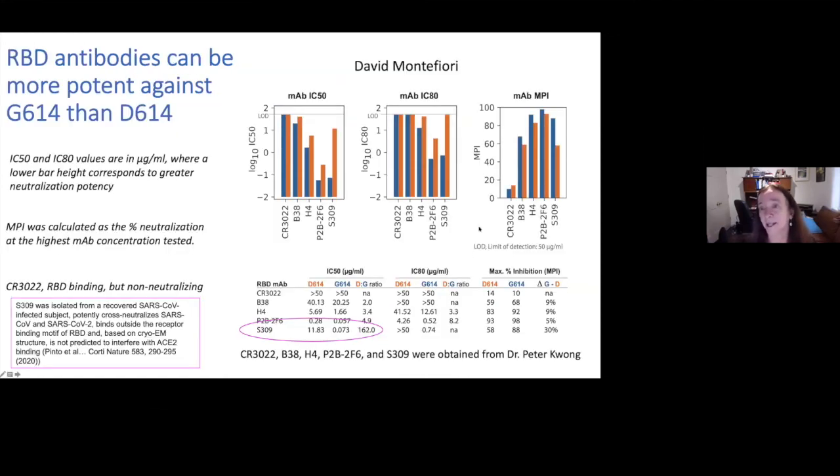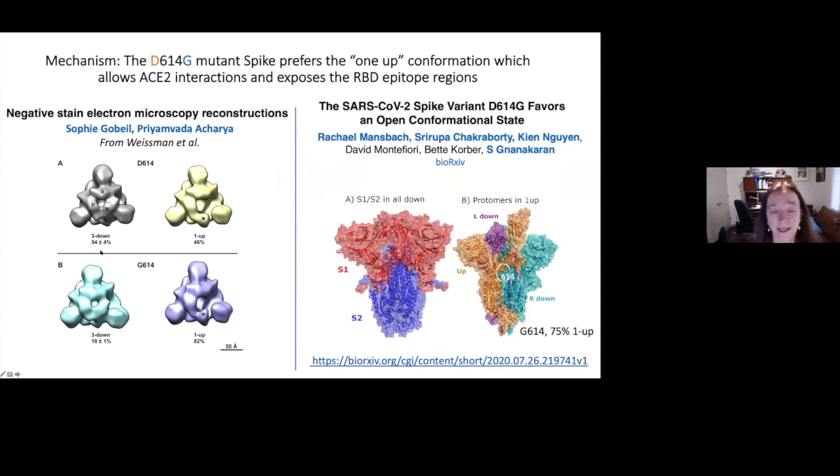So anyway, I think this is maybe going to be an important effect for both vaccines and sera. And then this is the monoclonal antibody story. So David got some monoclonal antibodies from Peter Kwong and this is the inverse situation. So IC50 means the lower values are more sensitive virus. And in these RBD binding antibodies, again, the effect was such that it was more sensitive in particular, it was a 162 fold effect for this antibody, which binds just outside the RBD.